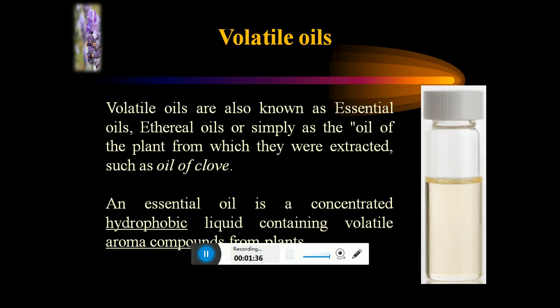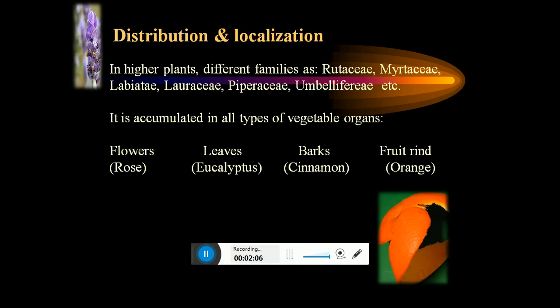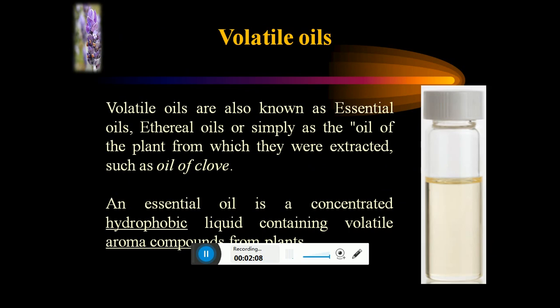Coming to the volatile oil general definition: oils which get volatilized at room temperature are termed as volatile oils. Volatile oils are also known as essential oils or ethereal oils, as they are soluble in ether, or simply as the oil of the plants from which they are extracted — for example, oil of clove. An essential oil is a concentrated hydrophobic liquid containing volatile aromatic compounds from plants.